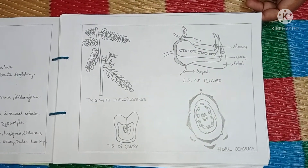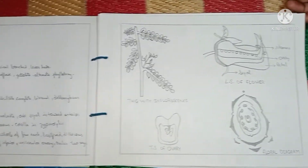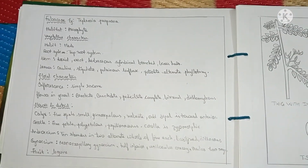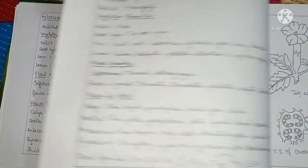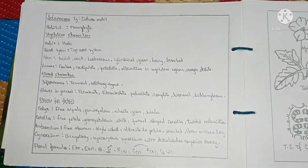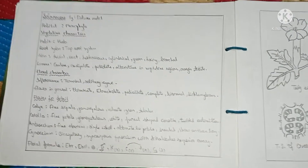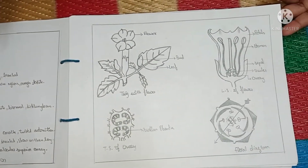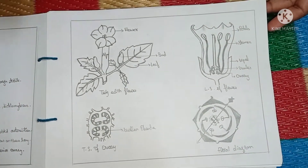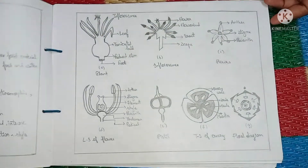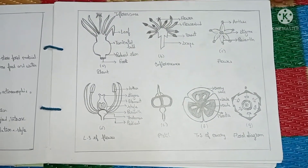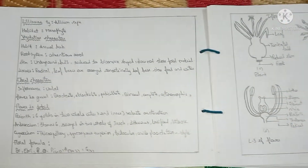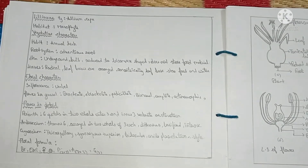The record book covers plant families including Fabaceae — with diagram and details of Fabaceae — details and diagram of Solanaceae, and diagram and details of Liliaceae.